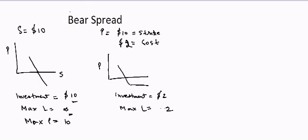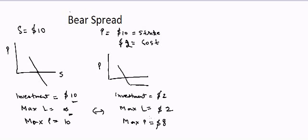The maximum loss will also be minus $2, because we only invested $2, so that should be our maximum loss. The maximum profit will be equal to $8, because we invested $2 — if the stock price goes to zero we make $10, minus the $2 invested, giving a maximum profit of $8. Comparing both scenarios, by lowering the investment we also lower the maximum loss, lowering the risk, but it also lowers the maximum profit.